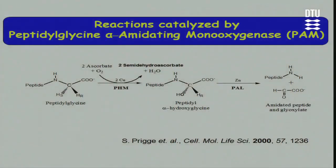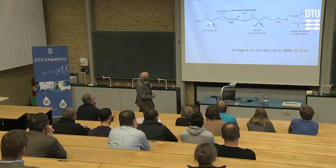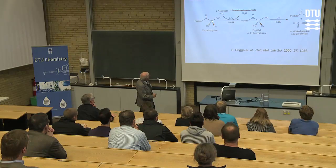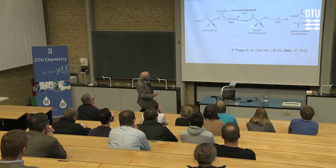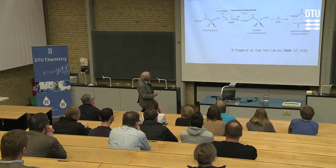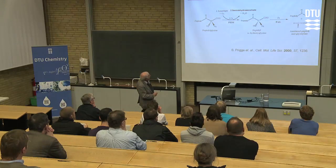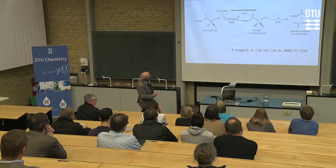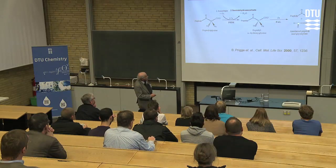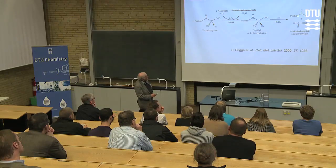This is not the usual amidation — not a transamidation from glutamine. Peptides are synthesized with an extra glycine at the end. The alpha carbon of that glycine is hydroxylated in a first step by an enzyme that uses copper, oxygen, and ascorbate as the reducing equivalents donor. Once hydroxylated, this bond becomes very labile, and a zinc enzyme just breaks that bond to produce glyoxylate and the amidated peptide.